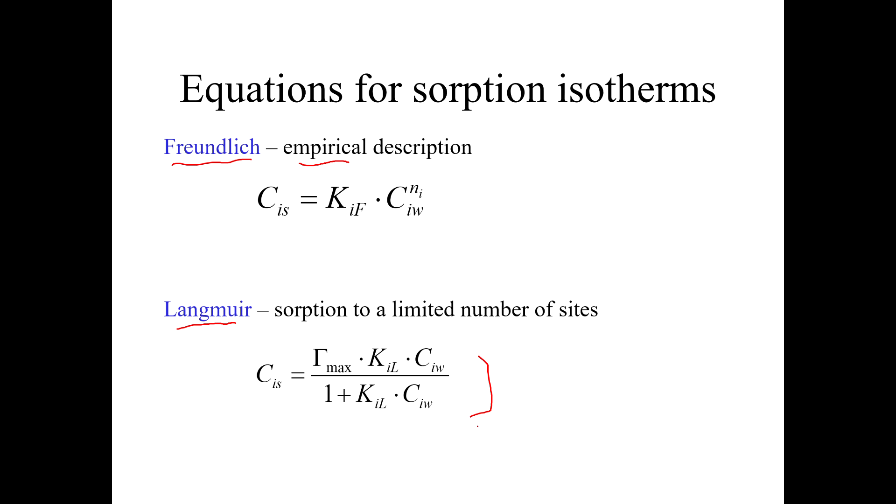And if you are at all familiar with Michaelis-Menten kinetics, you might be saying, 'Wow, that looks a lot like Michaelis-Menten kinetics.' Well, absolutely, because Michaelis-Menten kinetics is about chemicals that react on enzymes. And there's only so much enzyme to go around. And once all the enzyme is used up, the reaction can't go any faster. Same kind of thing is happening here. Once all the sorption sites are used up, you can't sorb anymore.